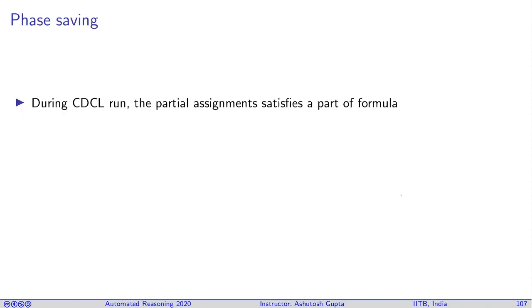This is the fourth technique, the last one in this runtime choices class of optimizations, which we call phase saving. Phase saving is the idea that even when you make a partial assignment, some variables are getting assigned because of unit propagation or decisions. Next time you come to same variable about to be assigned, we want to use the same phase, same direction. This is called phase saving.